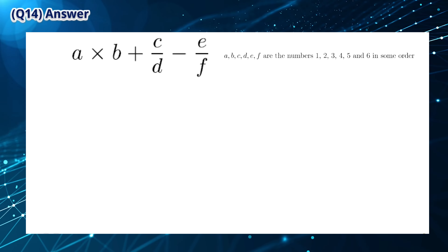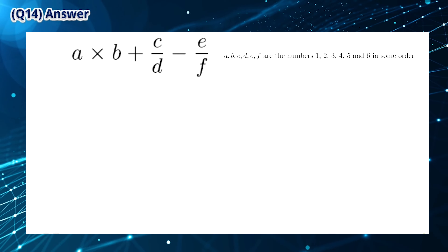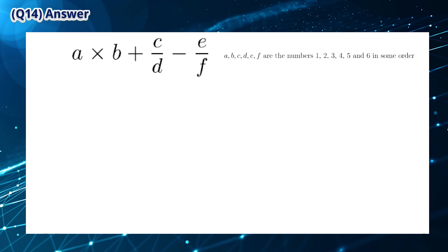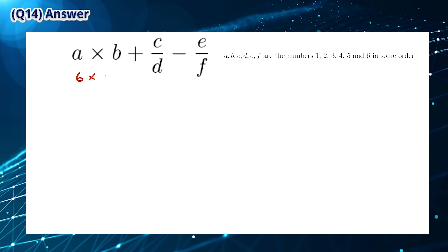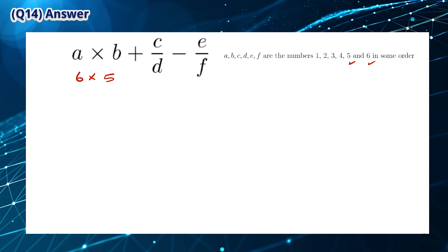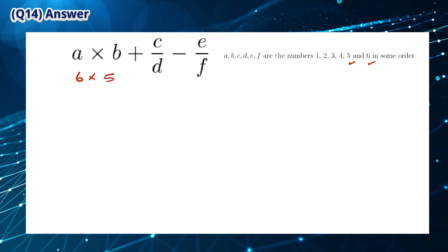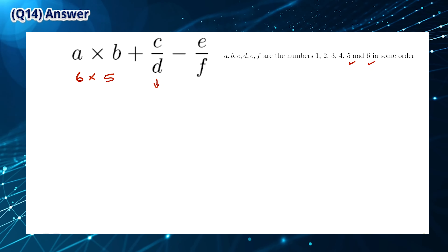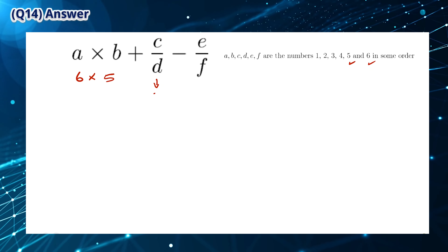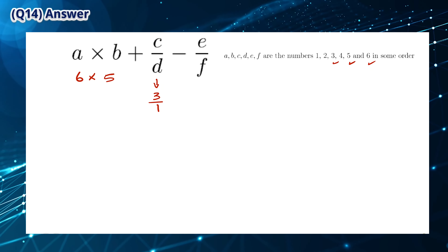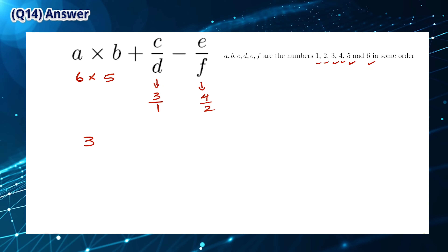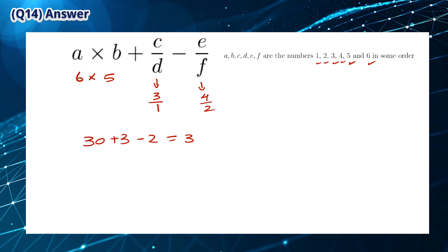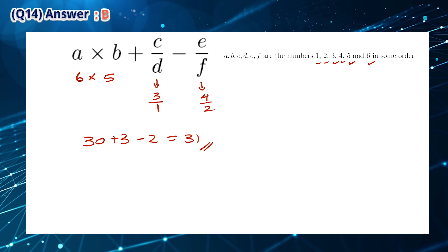From the numbers 1, 2, 3, 4, 5, and 6, A and B have to be the largest, so A is equal to 6 and B is equal to 5. C over D and E over F have to be whole numbers; the only values that satisfy these are 3 over 1 and 4 over 2. We can simplify this to get 30 plus 3 minus 2, which is equal to 31. This means that the answer is B.